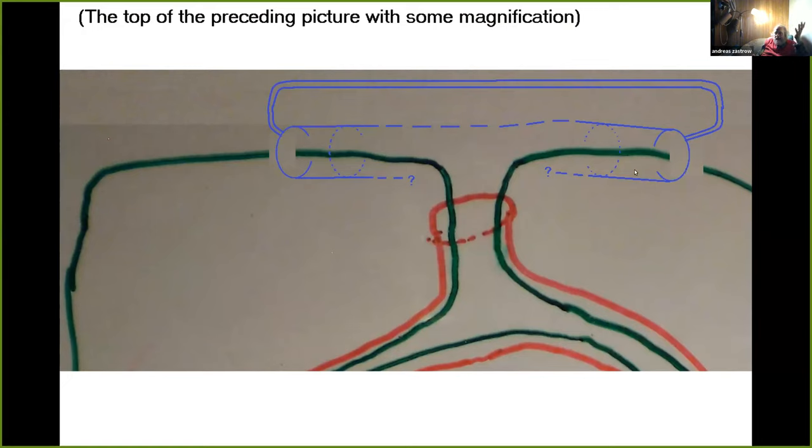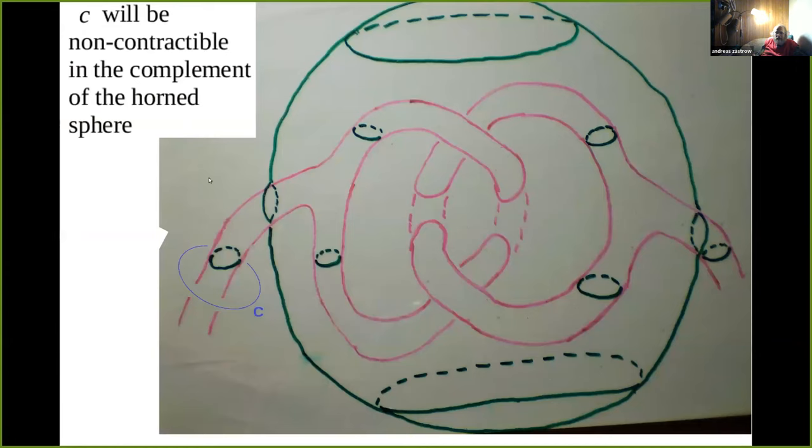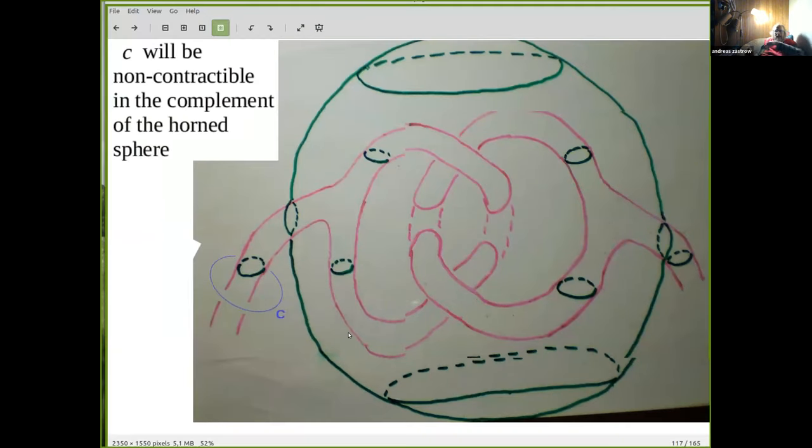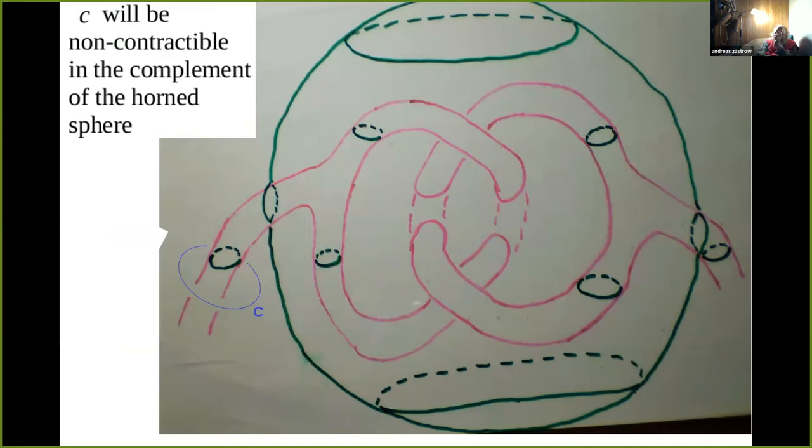This would give a continuous image of an annulus. We could search it by a band to the continuous image of a disk. The boundary curve of this disk, which therefore would be proven to be null homotopic, is precisely the same as this curve C where already Alexander has proven that it is not null homotopic. Alexander made his proof in the complement of the horned sphere. We need the proof of the complement of the horned knot, but the fundamental group of the complement of the horned knot is just an extension of the fundamental group of the horned sphere. So this curve remains not homotopic. We have definitely found a non-escape example.